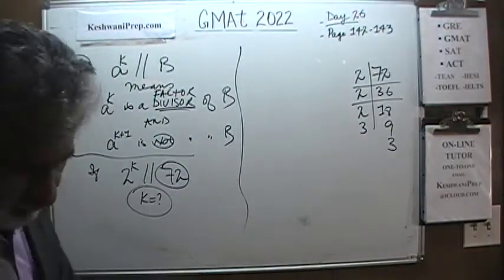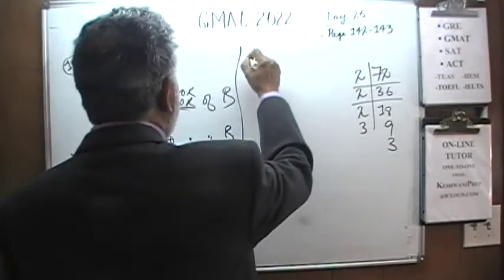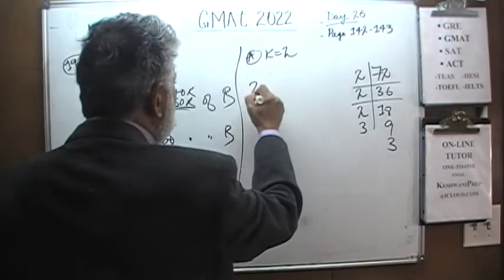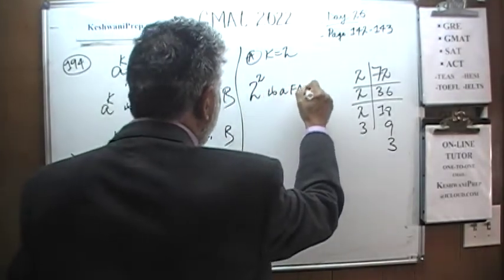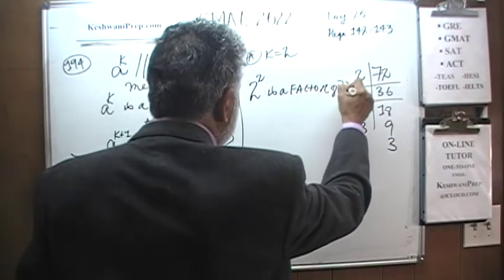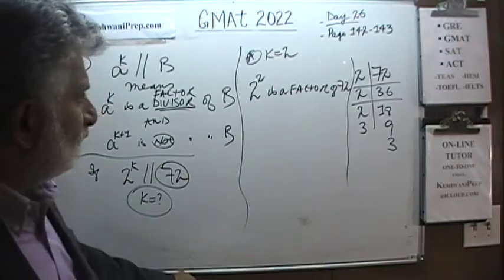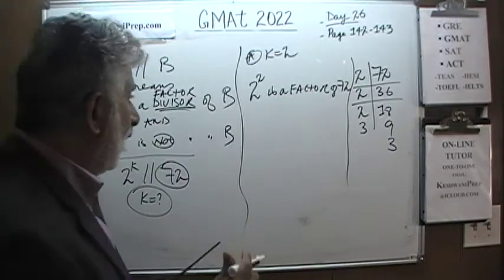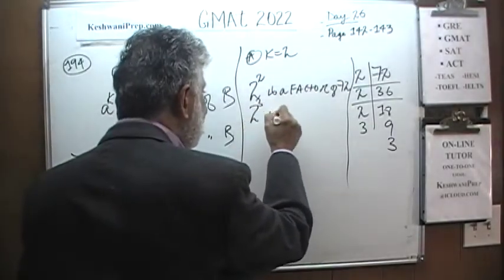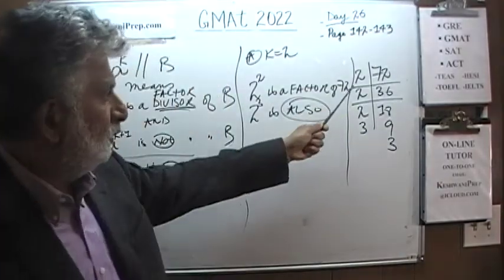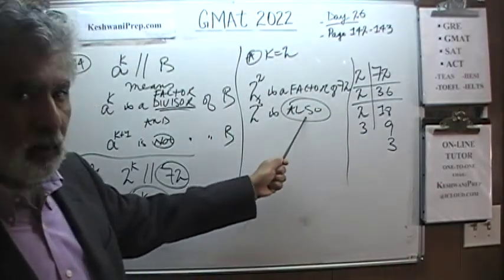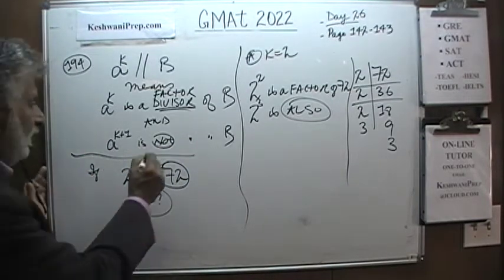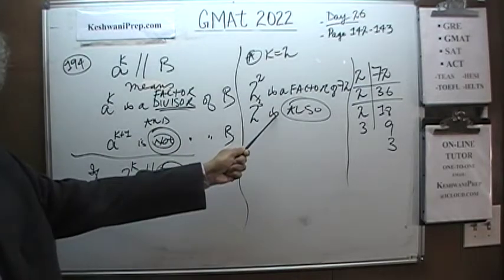Let's look at answer choice A, which says k equals 2. Would that work? 2 raised to 2 is 4, and 4 is a factor of 72 — 72 divides evenly by 4. However, 2 raised to 3 is also a factor — you can see there are three 2s in the factorization. We are looking for a situation where 2 raised to k is a factor but 2 raised to k+1 is not. Both work here for k=2, so that won't do.